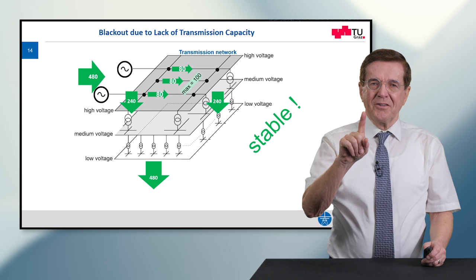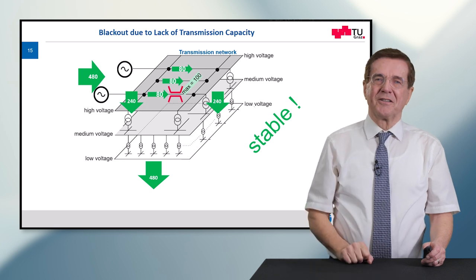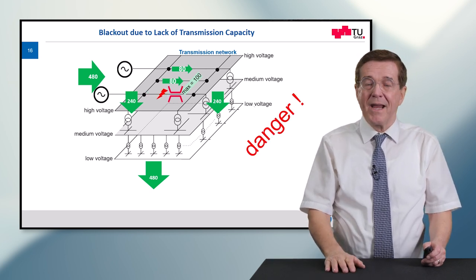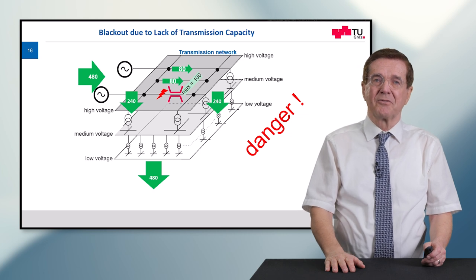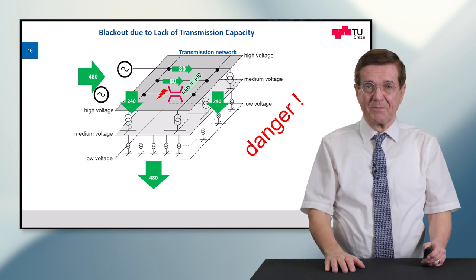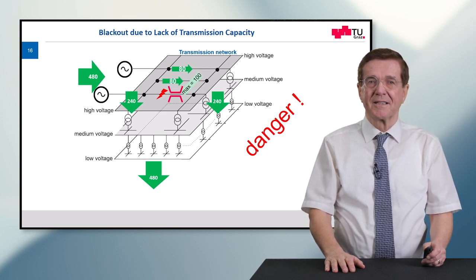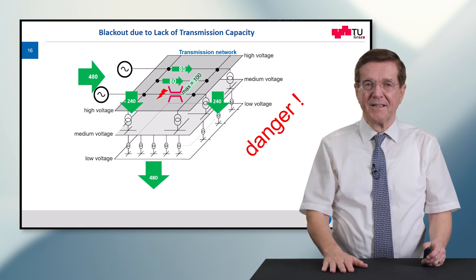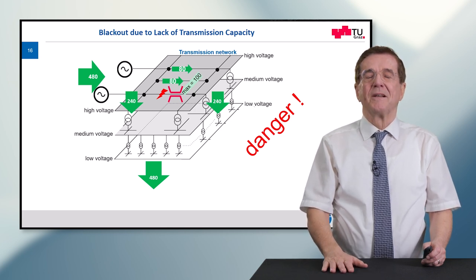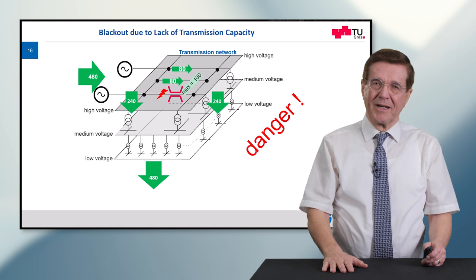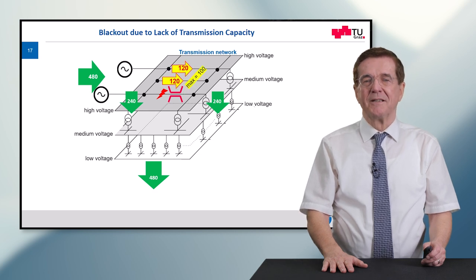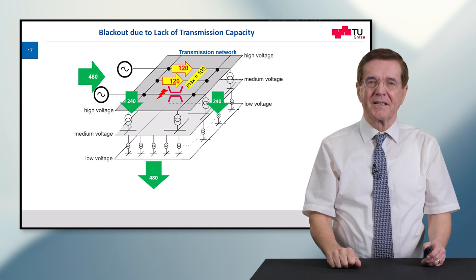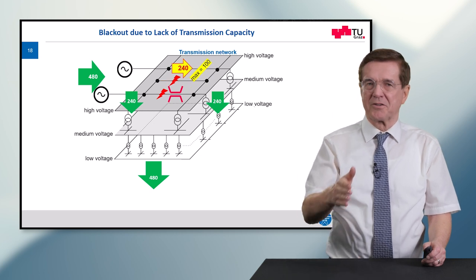What I did not mention yet is that the first line has a bottleneck problem which may lead to a short circuit and will trip out this first line — this is the danger point, this is where it starts. The power that flows from left to right will now be split between the two remaining lines, which immediately go on overload and will trip out.